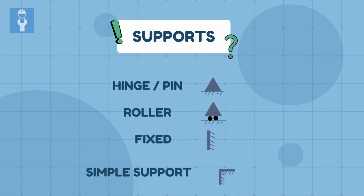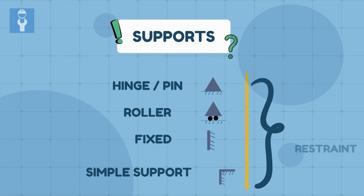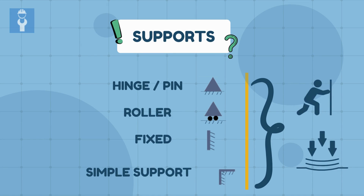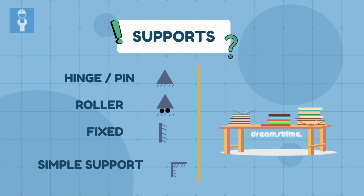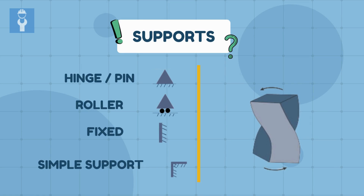You might have heard about fixed support, roller support, simple support or hinge support, but what are they all? These supports are responsible for providing restraint to the structural member to avoid lateral or vertical movement or deflection. They're in fact the reason why structures are able to resist forces and transfer them safely.